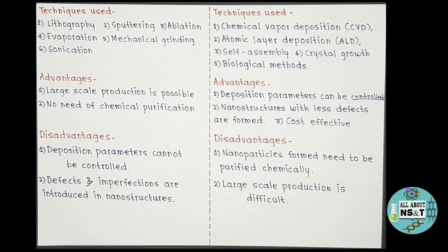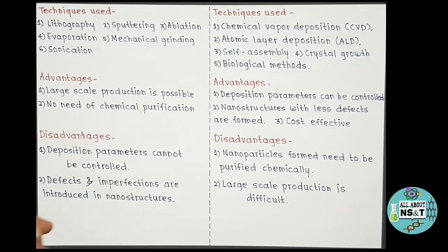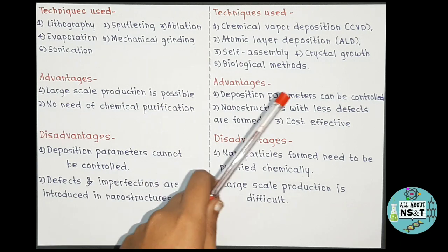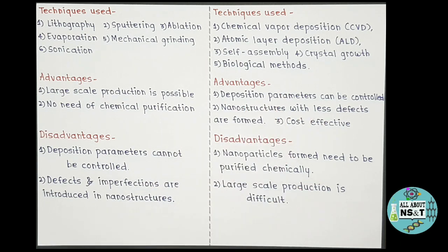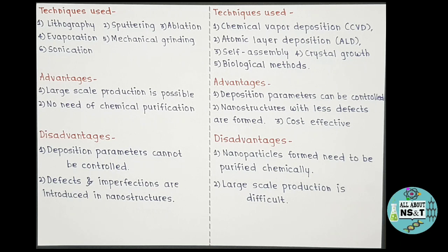Both approaches offer advantages and disadvantages. Advantages of the top-down approach are: large-scale production is possible, and there is no need for chemical purification. Advantages of the bottom-up approach are: deposition parameters can be controlled, nanostructures with fewer defects are formed, and the method is very cost-effective — it is a cheaper method.